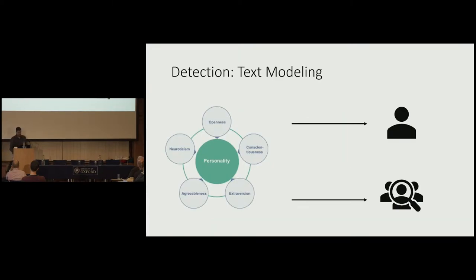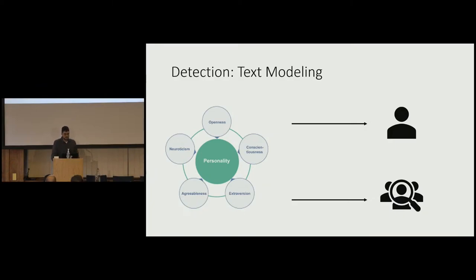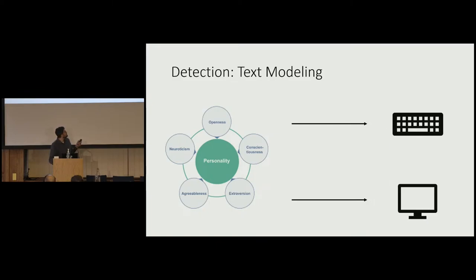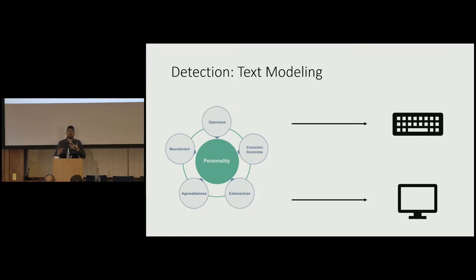To understand whether a particular message is tailored to a specific user, we need to know the personality of the user but also the personality of the target audience, so we can see if those two align. We developed two text models: one predicts personality from the text people write, and the other predicts what type of language is more appealing to different personalities based on the text they consume.